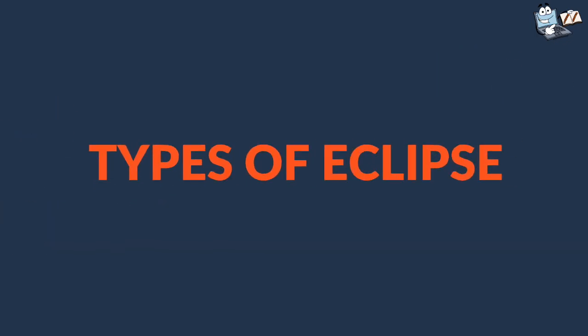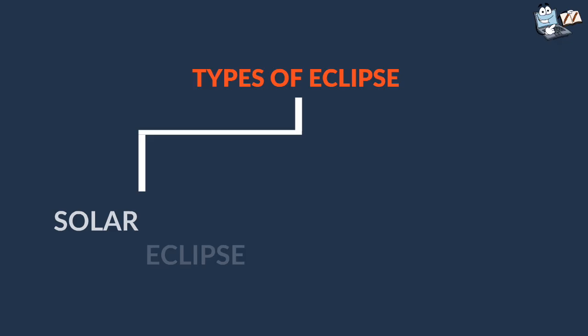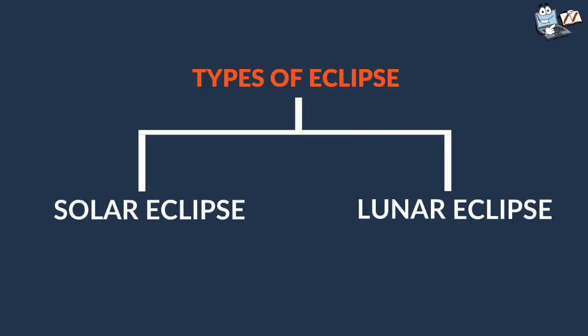From our Earth there are two kinds of eclipses. First, solar eclipses and second, lunar eclipses.